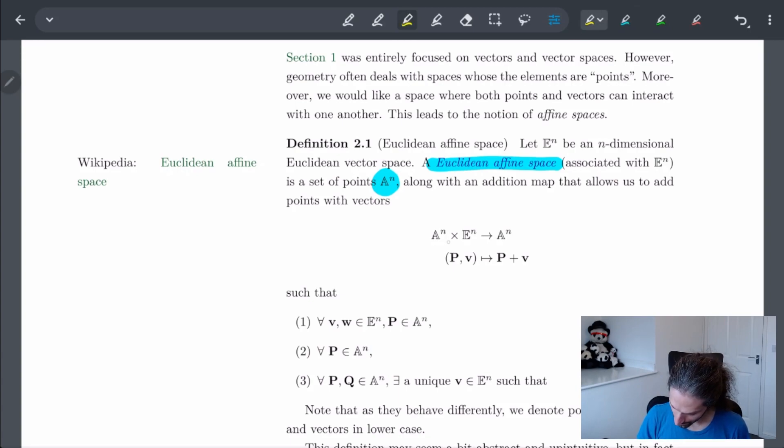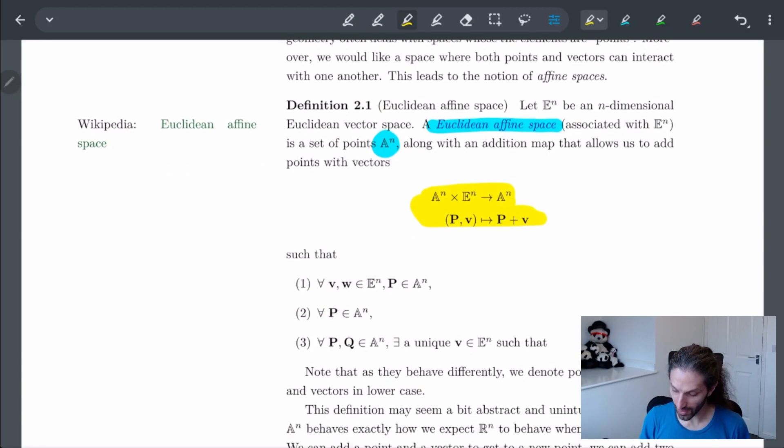So in other words, we have this map. We have this map here that is allowing us to take some point, a point in A^n, and we have some vector V in E^n, and we come up with some point. So we haven't really said what this point looks like.